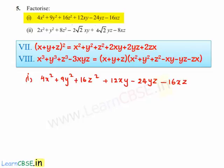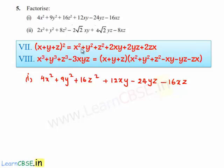In order to factorize the given polynomial, we need to make use of the seventh identity, which is x plus y plus z whole square is equal to x square plus y square plus z square plus 2xy plus 2yz plus 2zx.